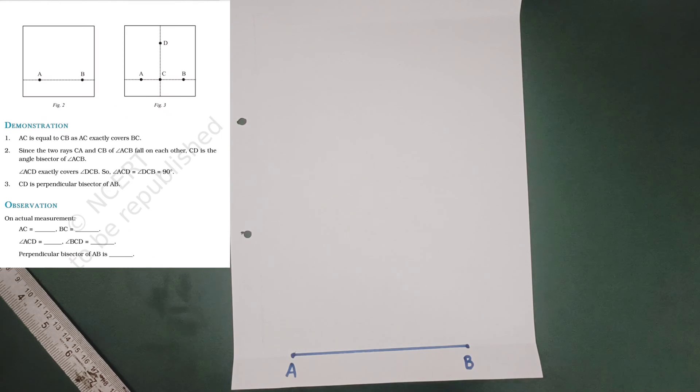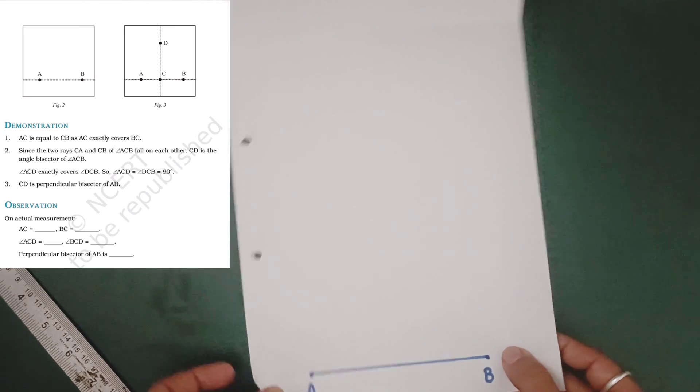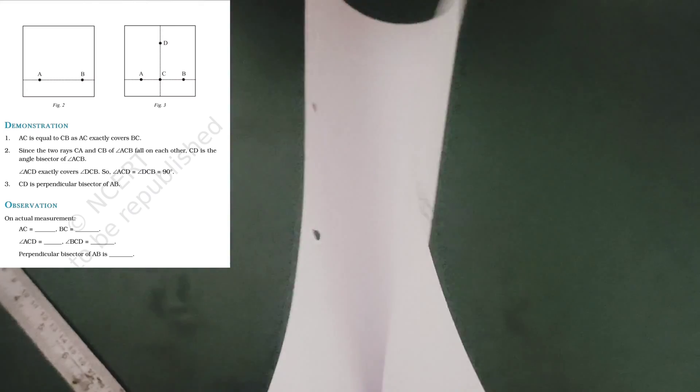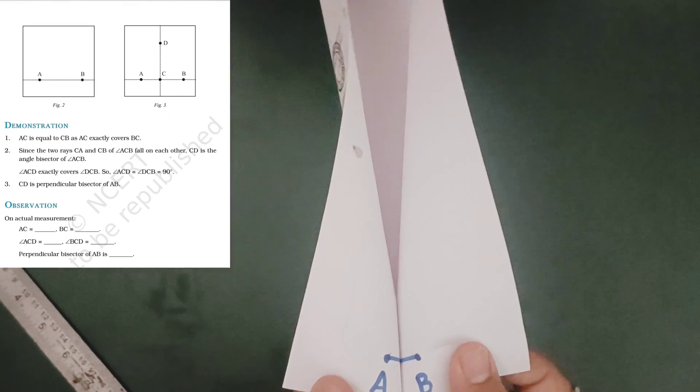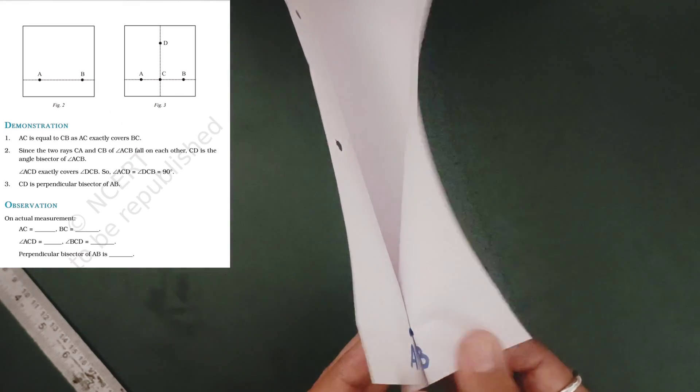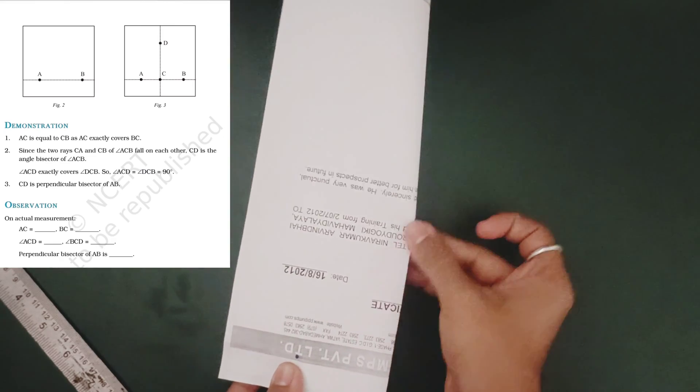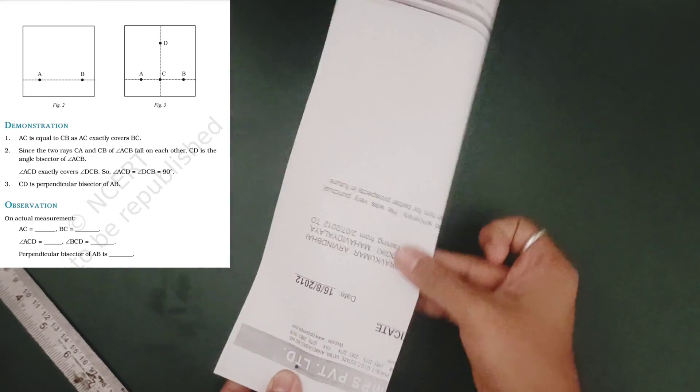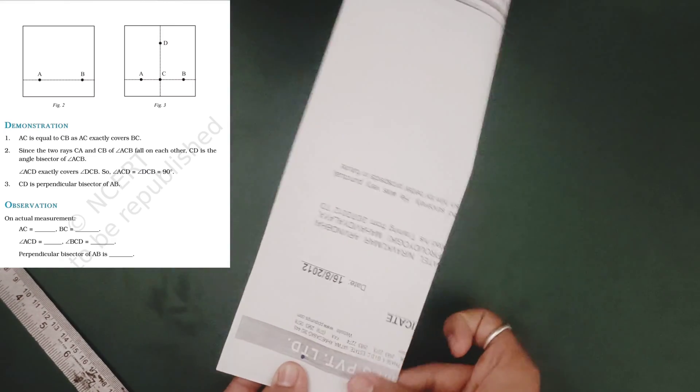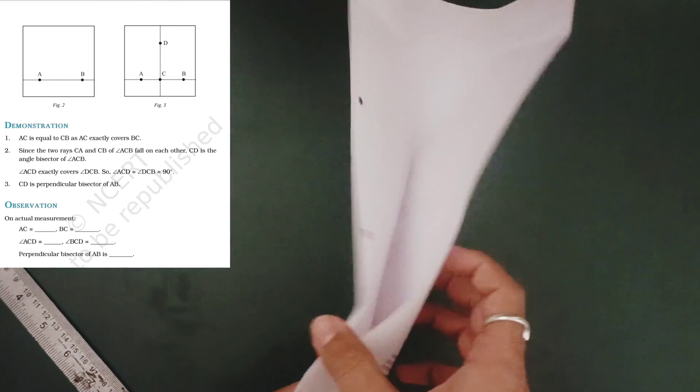Now fold the paper in such a way that point B falls on point A. You have to merge like this. See, have you seen? Point A falls on point B. Now make a crease.